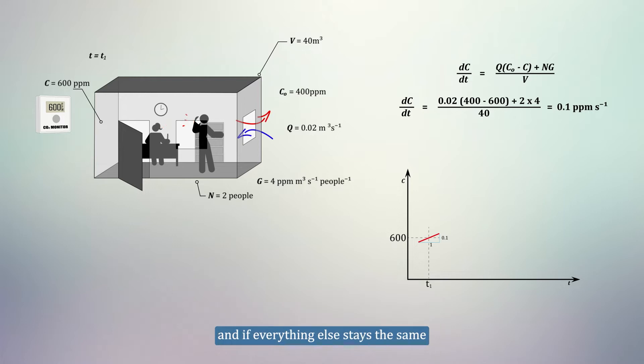And, if everything else stays the same, as C changes, so will the gradient of the graph. So, the gradient depends on C, and C depends on the gradient.